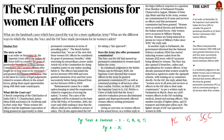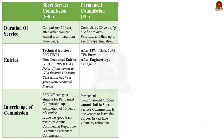A permanent commission means a career in the army till you retire. To get permanent commission, one has to join the National Defense Academy or the Indian Military Academy. A short service commission is another option of joining the army and serving as a commissioned officer for a period of 10 years. At the end of this period, a person can either elect for a permanent commission or opt out and lead a civilian life.